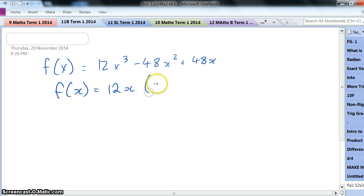So I'll take out the common factor of 12x, leaves me with x² - 4x + 4. You'll recognize the right-hand term there is a perfect square. So f(x) equals 12x times (x - 2)².